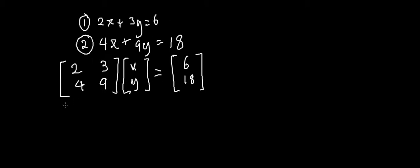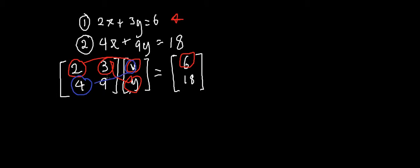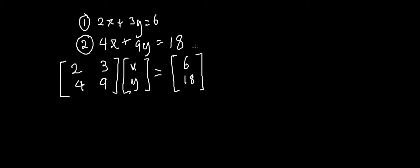Just so you can see that is true — if we know how to multiply our matrices, which I'm assuming you've had some experience with, you get 2 times x plus 3 times y equals 6, which is our first equation. And then our second one will be 4 times x plus 9 times y equals 18, which is our second equation. So that's how we times them out, and you can see that although it's in matrix form it's the same as the original equations.